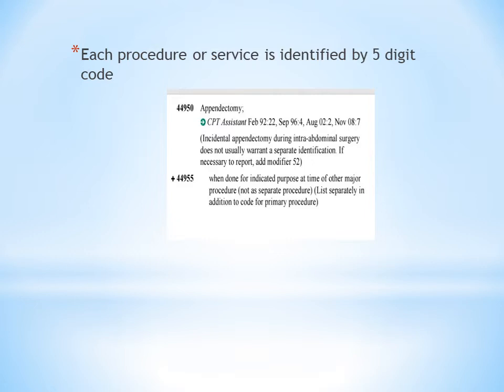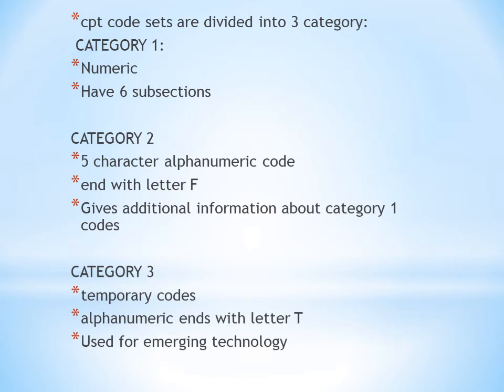For example, the code 44950 is the code for appendectomy. So in the previous case where the physician ordered an appendectomy, the code will be 44950 — a five-digit code.